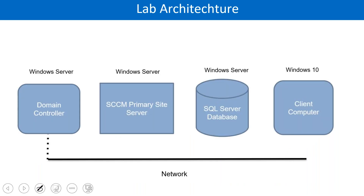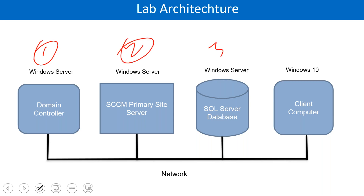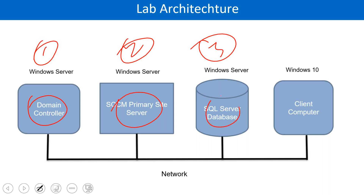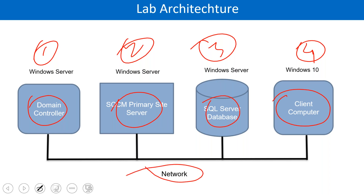The lab architecture will include three servers: a domain server, an SCCM primary site server, and a SQL database server — all separate. We will also have one Windows 10 client computer. All of them will be on the same LAN network so they can communicate with each other.